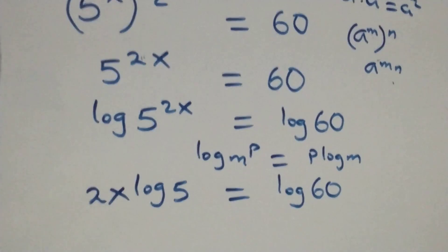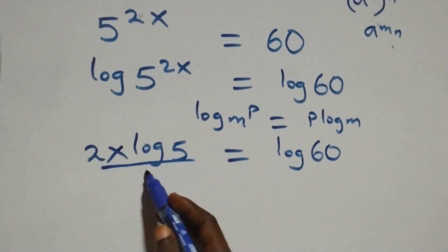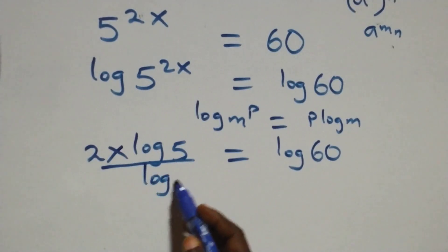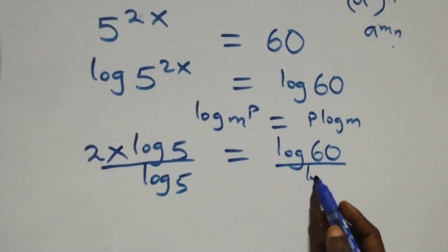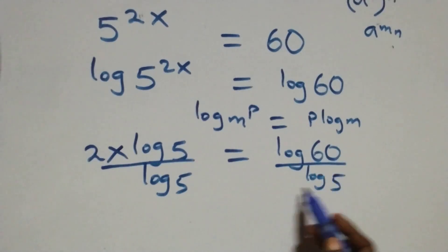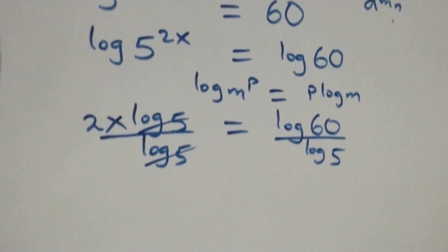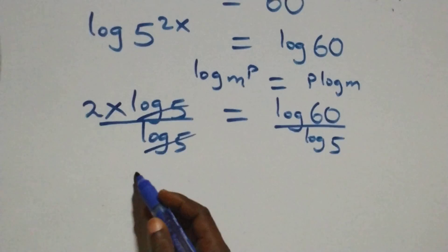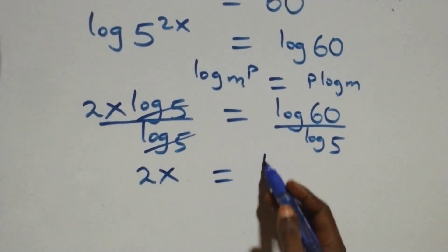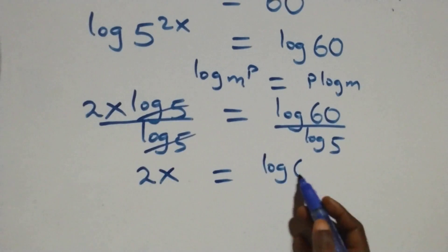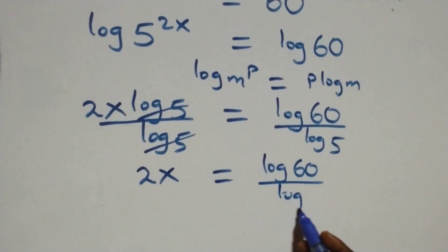That gives us two x log five equals log sixty. The next step: we divide both sides by log five. Log five cancels, and we have two x equals log sixty over log five.